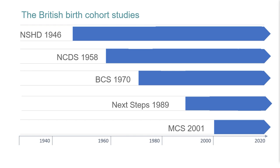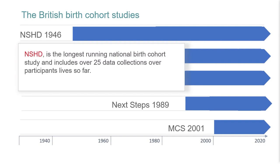Some of the most well-known and utilised birth cohorts in the UK include the National Survey of Health and Development, which began in 1946 and is the UK's longest running birth cohort study. The study follows a randomly selected sample of 5,362 people born in England, Wales and Scotland during a single week in March 1946 — approximately one-third of all babies born that week. These individuals have been followed up 25 times through a combination of paper questionnaires and visits by health visitors or nurses, either in the home or in a clinic. The most recent assessment of this cohort occurred during the COVID-19 pandemic, when participants were aged approximately 74 years.